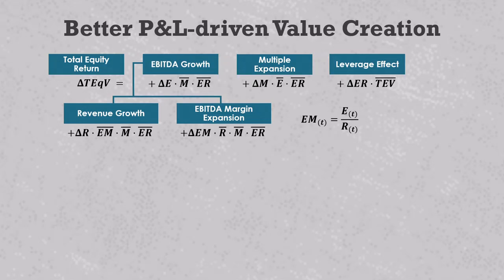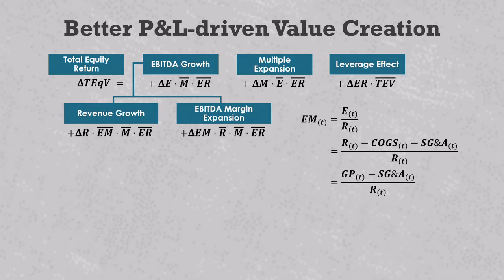Now, this is the correct spot to introduce the fact that EBITDA equals revenue minus COGS minus SG&A. We plug that into the EBITDA margin formula here. In the numerator, R minus COGS is equal to the gross profit, or GP, so we can make that substitution. Then we can split up the gross profit and the SG&A values into two terms that have revenue as a common denominator.